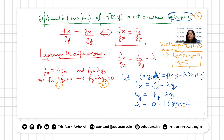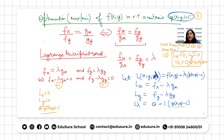Therefore, we solve these equations — Lx equals zero, Ly equals zero — along with g(x,y) equals c, to find the points of maxima or minima. Note that L-lambda equals zero is equivalent to g(x,y) equals c.